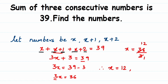Now that we have x equals 12, we can find the other two values. x plus 1 equals 12 plus 1, which is 13. And x plus 2 equals 12 plus 2, which is 14. So the three consecutive numbers are 12, 13, and 14. If we add them we get the sum 39. I hope it's clear — if you have any question, drop a comment below. Thank you for watching.